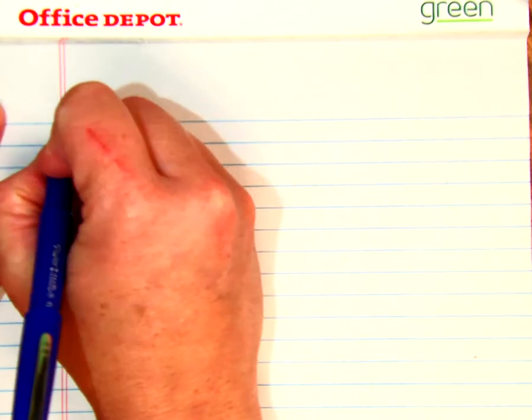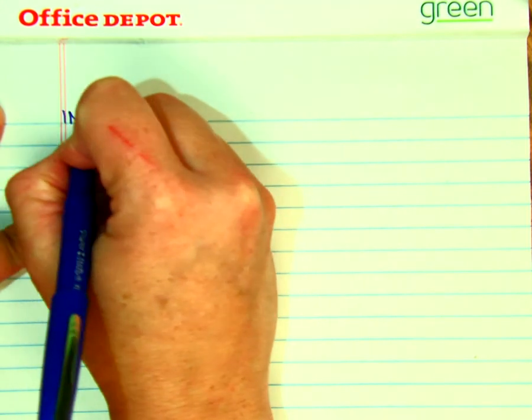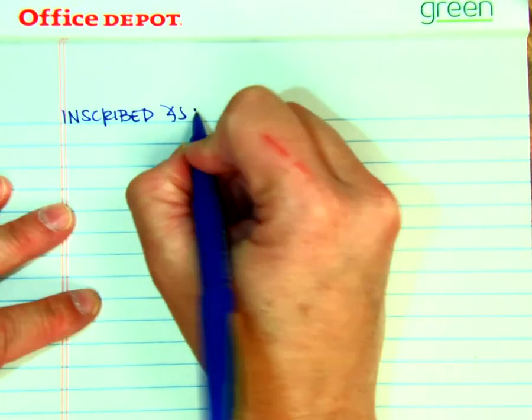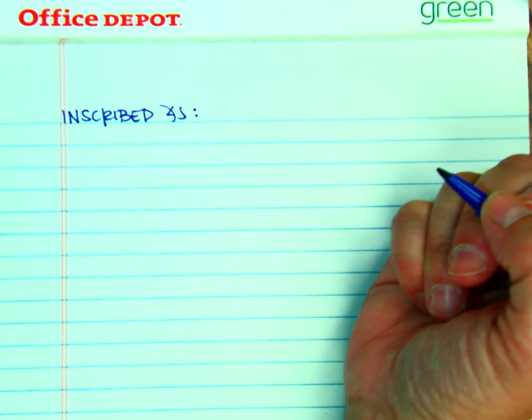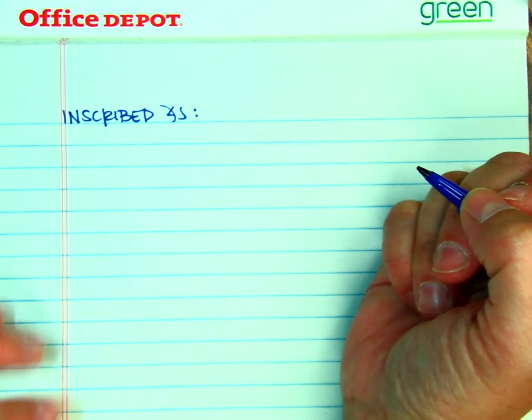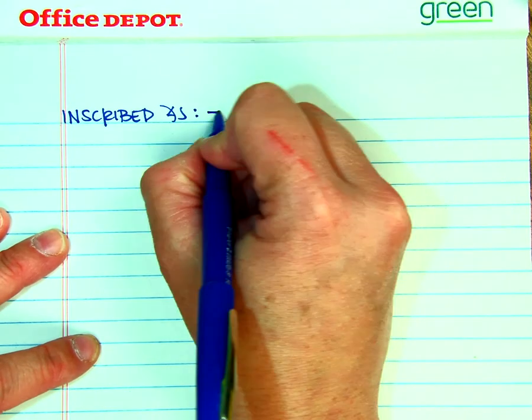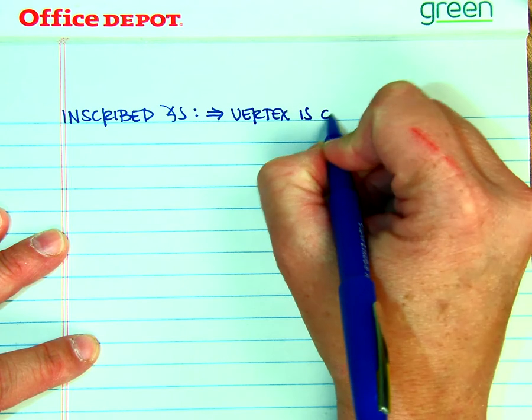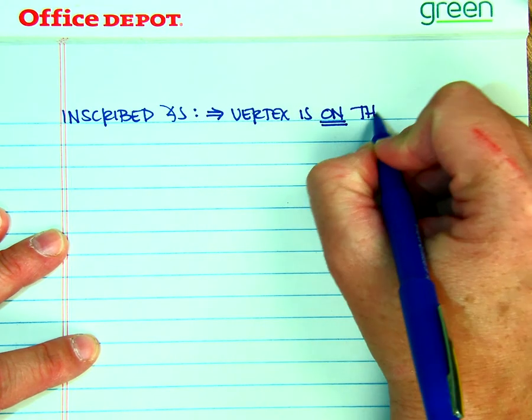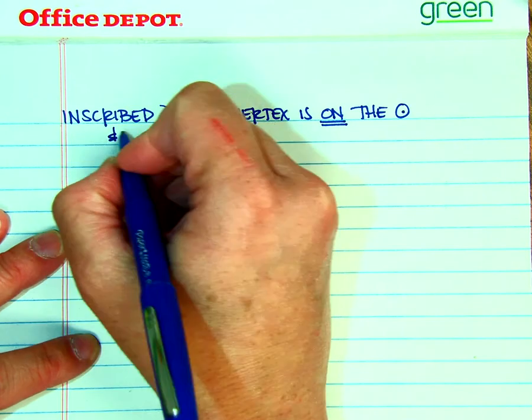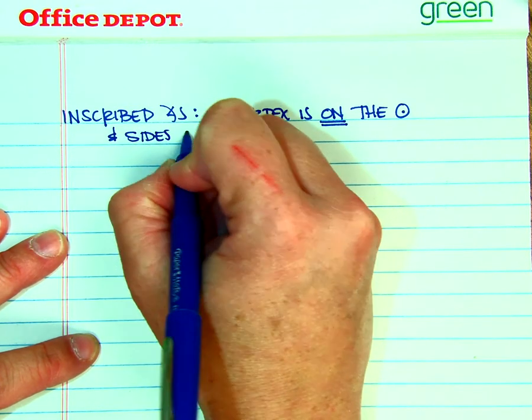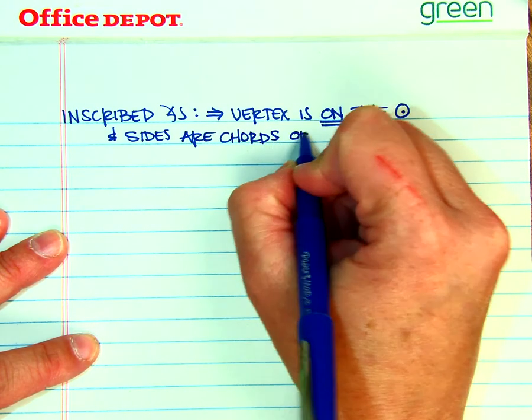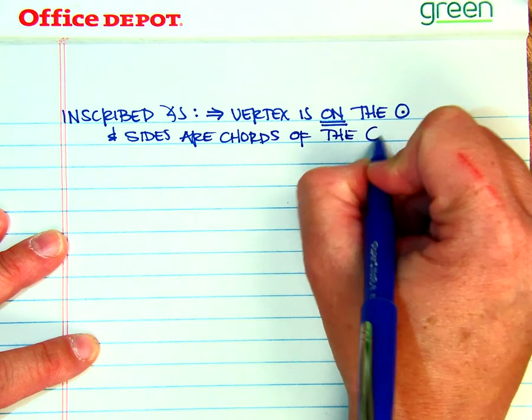Okay, so for today we're going to be talking about inscribed angles. So far we've talked about central angles, and those have the vertex at the center, whereas inscribed angles have their vertex on the circle and sides are chords of the circle.